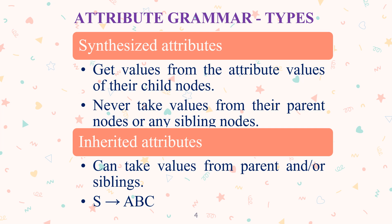In inherited attributes, a node can take values from its parent and/or siblings. For example, S implies A, B, C. Here, A can take values from S, B, and C. If we take B, then B can take values from S, A, and C. So inherited attributes allow taking parent and sibling values.